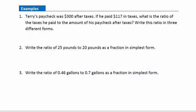Let's take a look at some examples. Example 1: Terry's paycheck was $300 after taxes. If he paid $117 in taxes, what is the ratio of the taxes he paid to the amount of his paycheck after taxes? Write this ratio in three different forms. So taxes he paid is $117, so that's coming first. So $117 to $300, and I don't need to include the dollar signs here. Notice we're comparing dollars and dollars.